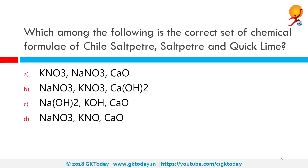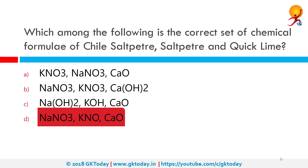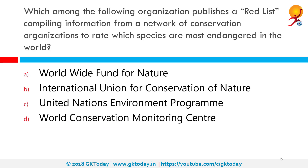Which among the following is the correct set of chemical formulae for chile saltpeter, saltpeter, and quicklime? The correct answer is D: NaNO₃, KNO₃, and CaO.